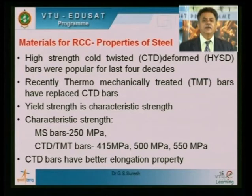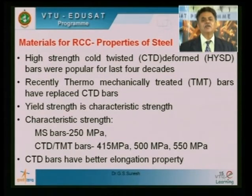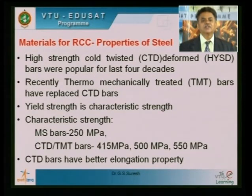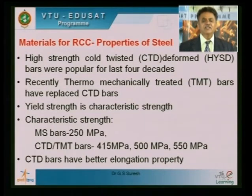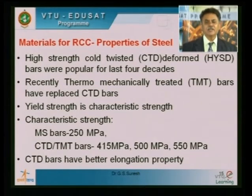TMT bars have a higher percentage of elongation compared to CTD bars, but the design strength is the same for both. Available yield strengths in the market are 415, 500, and 550 MPa. The 550 MPa bar is very rare and only available in smaller diameters. Popularly used bar strengths are 415 and 500 MPa.